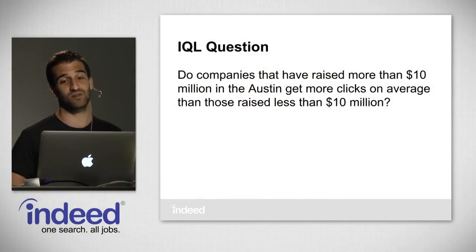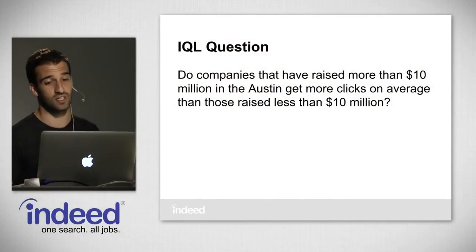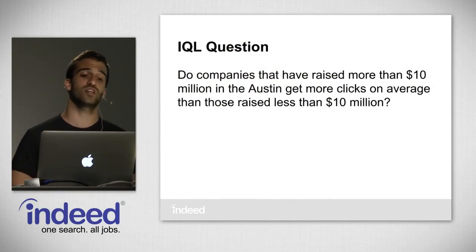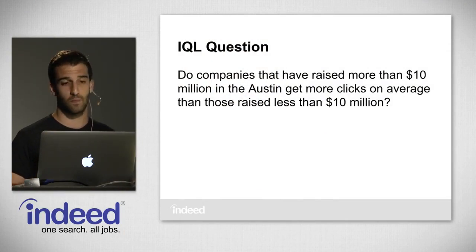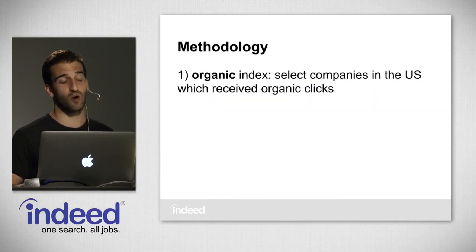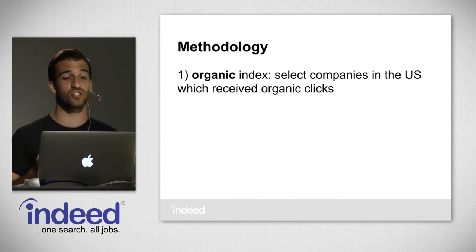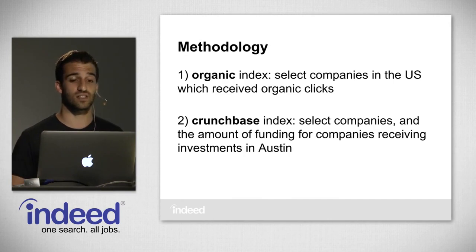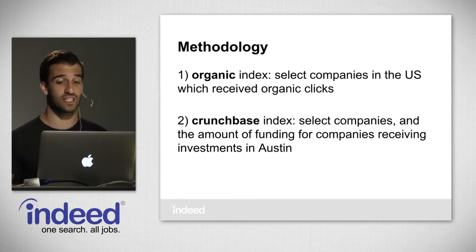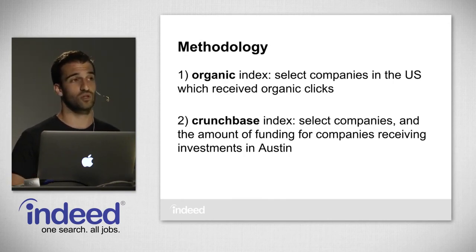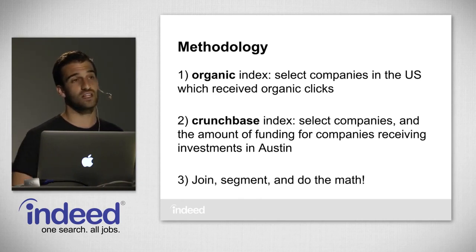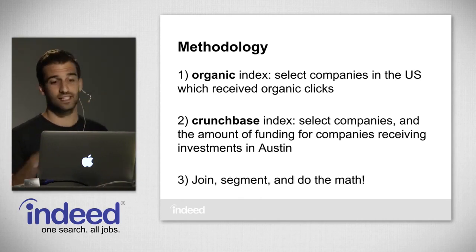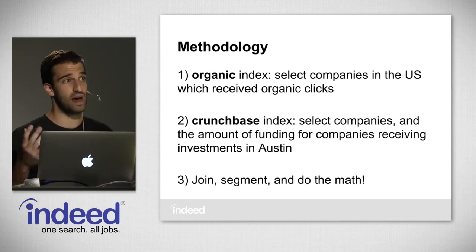With IQL we can answer really cool questions, like: do companies that have raised more than $10 million in Austin get more clicks on average than those that have raised less than $10 million? To answer this, we have three steps: go to the organic index and select companies in the US that received organic clicks; go to the Crunchbase index and select companies and the amount of funding for those who received investments in Austin; and finally join these two, segment based on that $10 million number, and do the math.